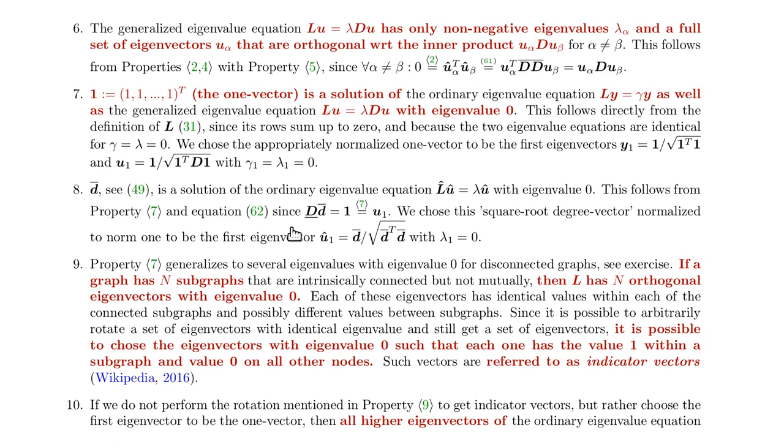So if you have a disconnected graph, then there's not just the one, one, one, one vector which has the eigenvalue of zero, but there are several others depending on how many subgraphs you have. And one way to write this, you could assume that you have, let's say, if you have a graph with four nodes,